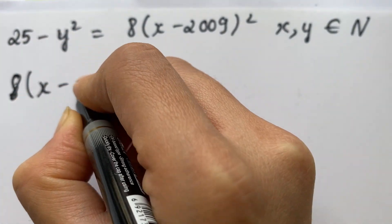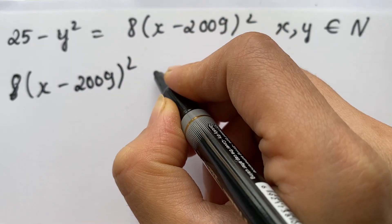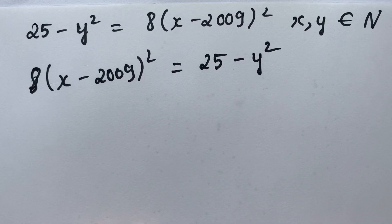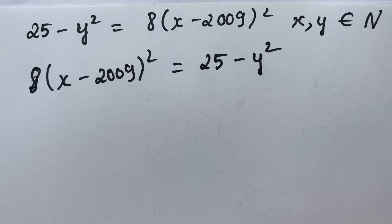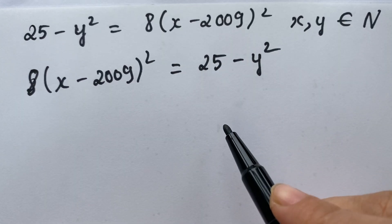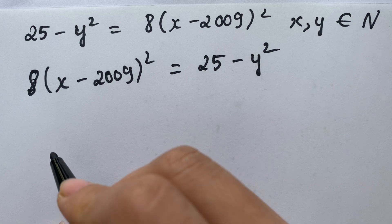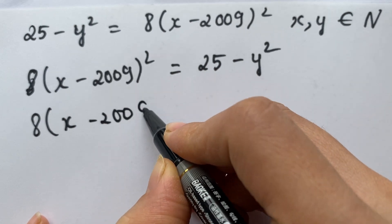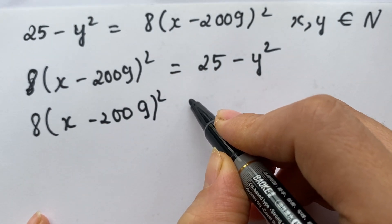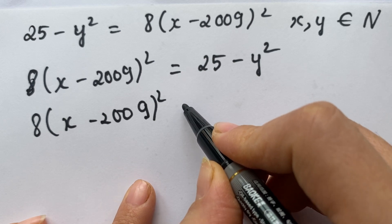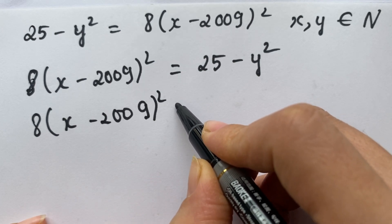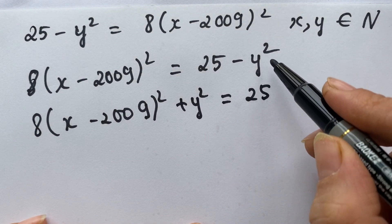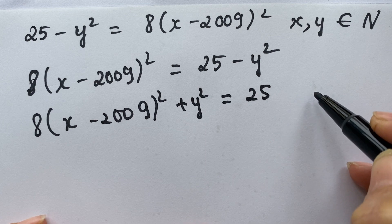x minus 2009, squared, equals 25 minus y squared. You need to move y squared to the left-hand side. Next, you need to add y squared to both sides — plus y squared and 25 — and you can cross out y squared on the right-hand side.